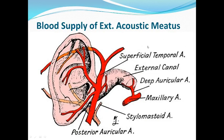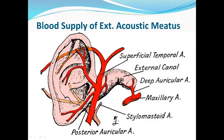Talking about the blood supply of the external acoustic meatus: the outer part of this meatus is supplied by the superficial temporal artery and the posterior auricular artery. The innermost part will be supplied by the deep auricular artery — the deep auricular branch of the maxillary artery.